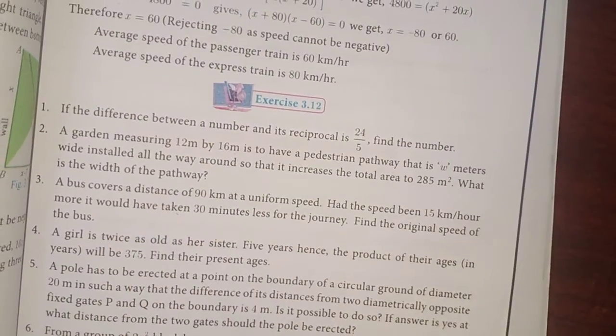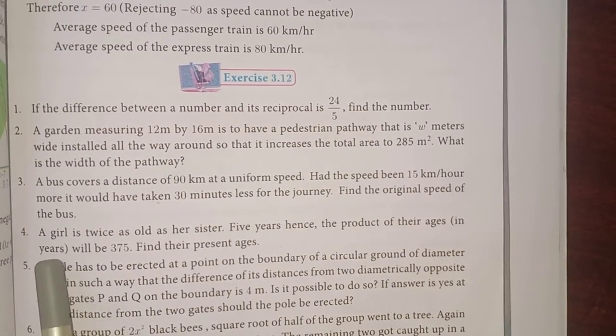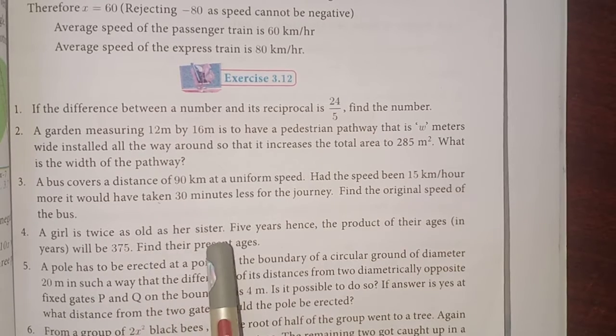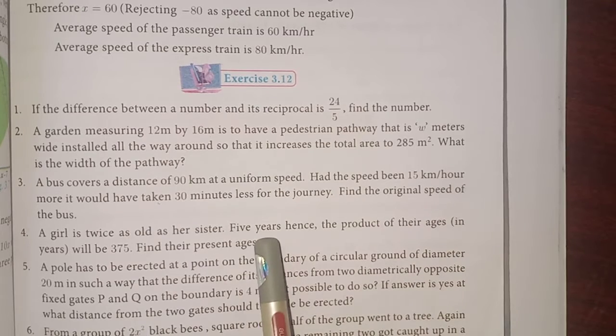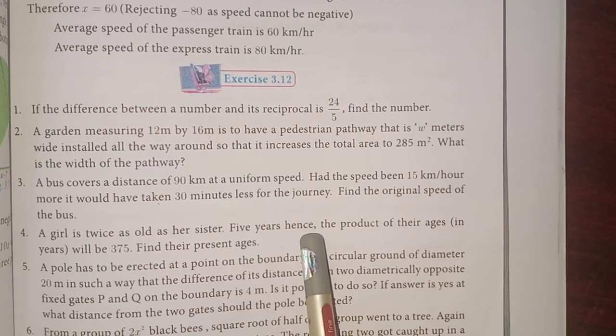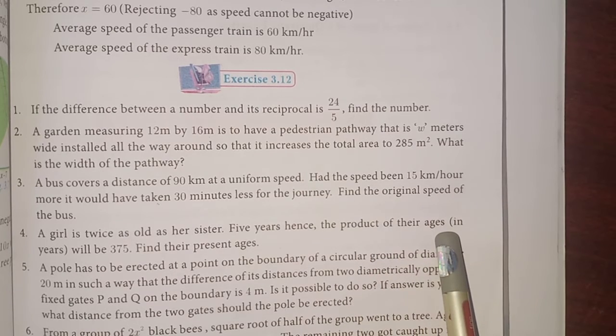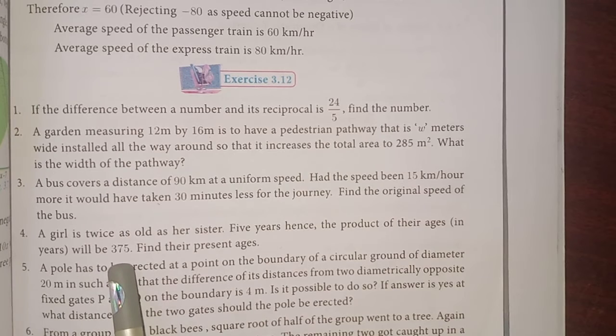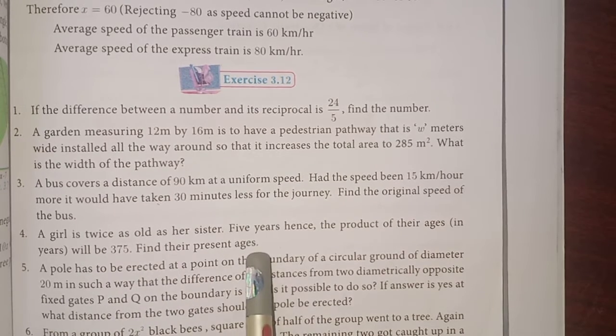Now, Problem Number 4. A girl is twice as old as her sister. 5 years hence, the product of their ages in years will be 375. Find their present ages.